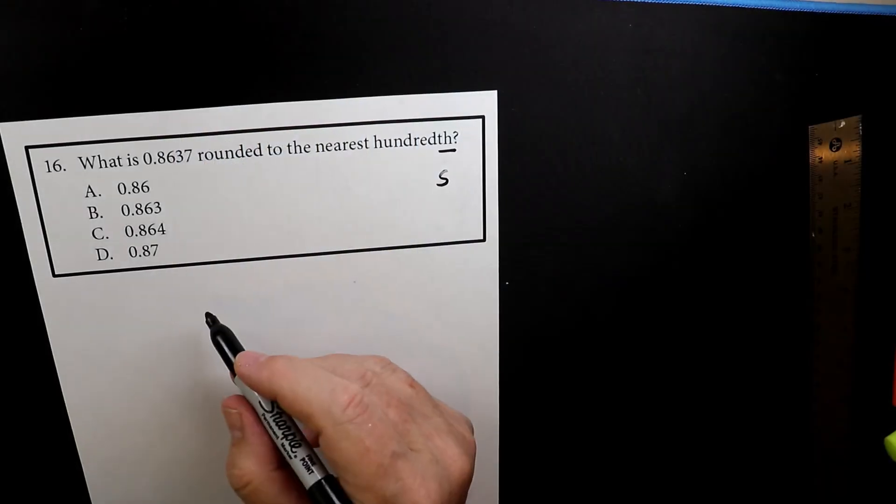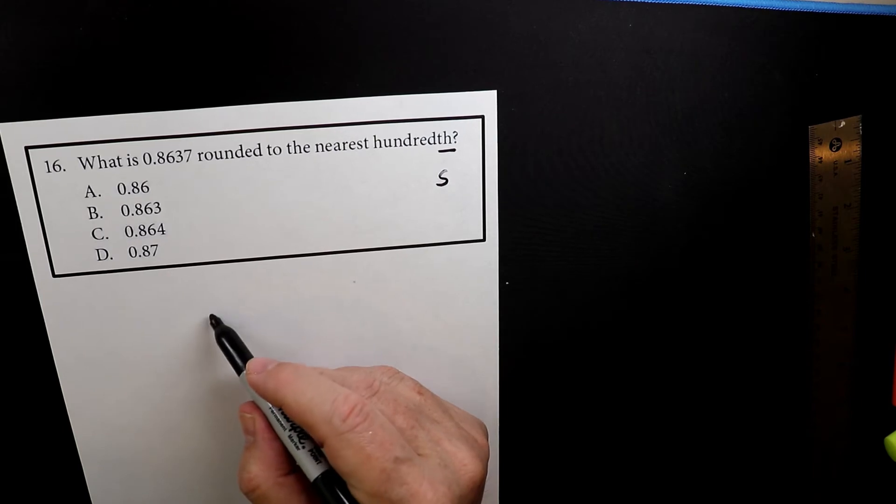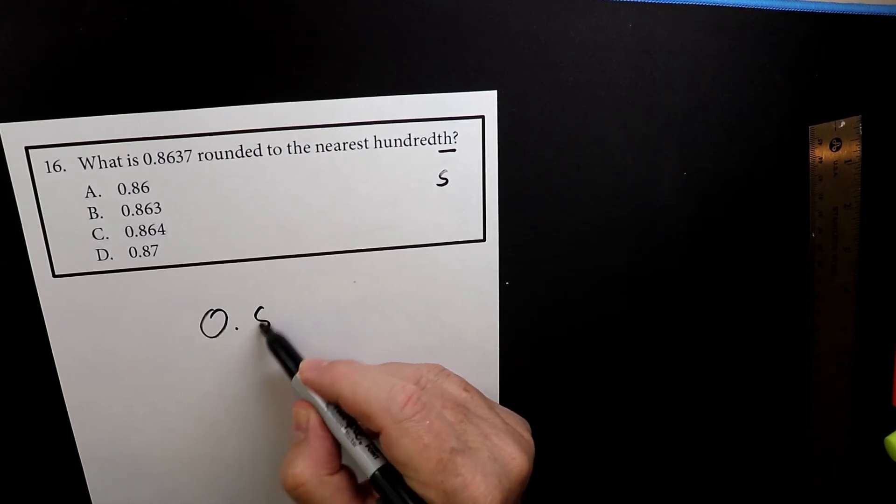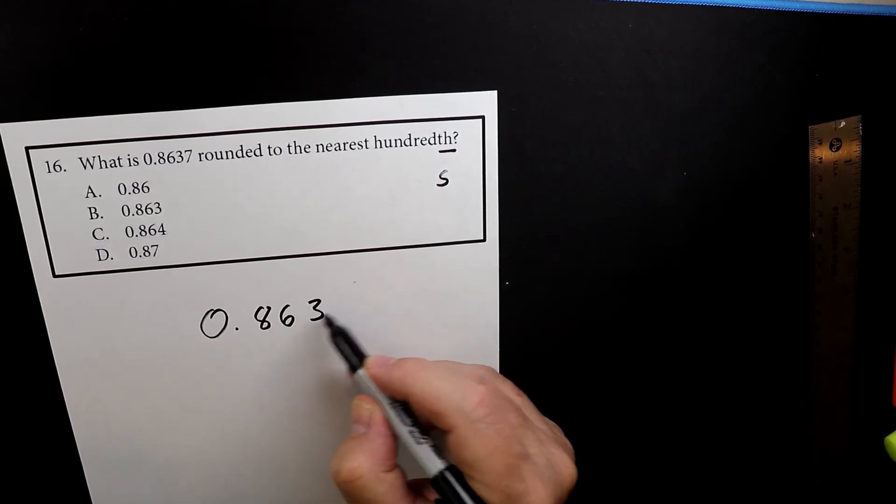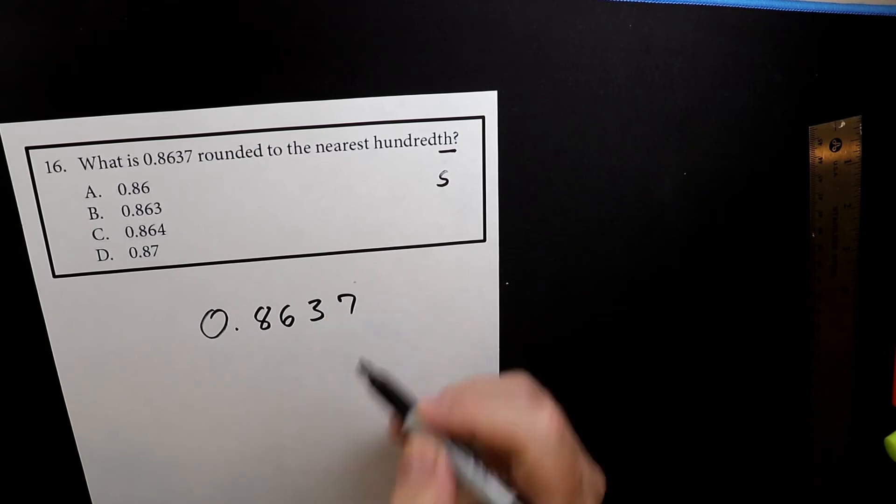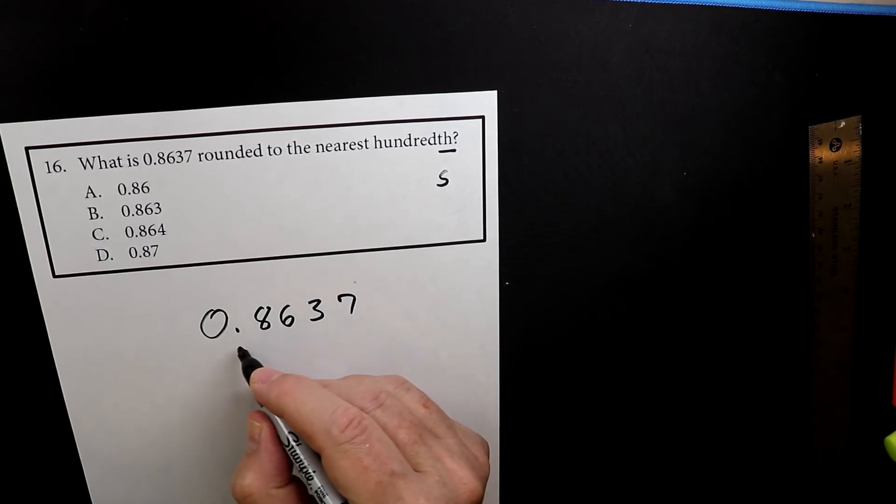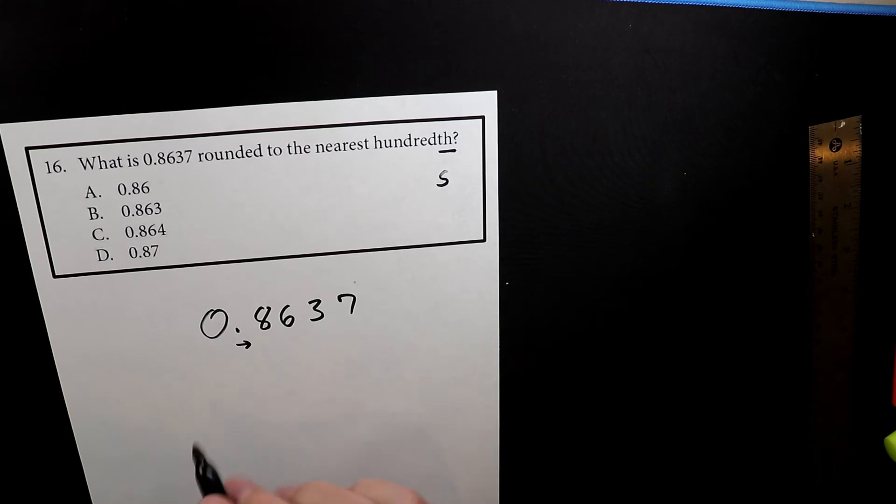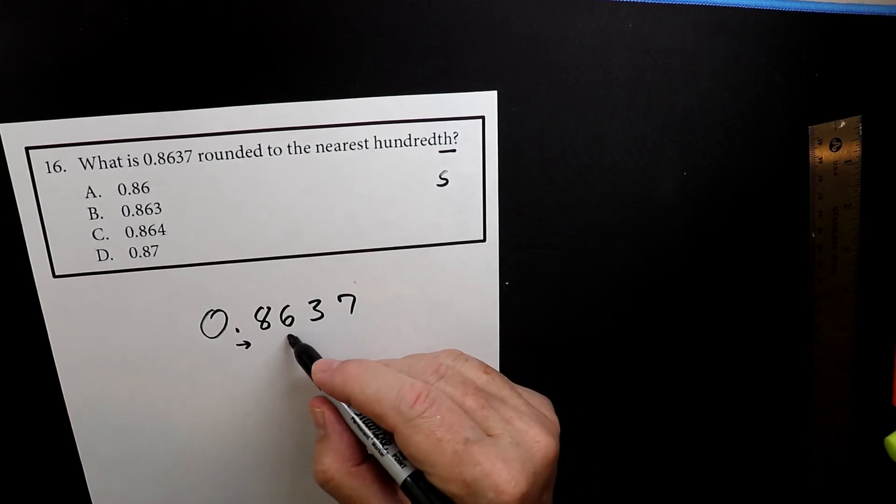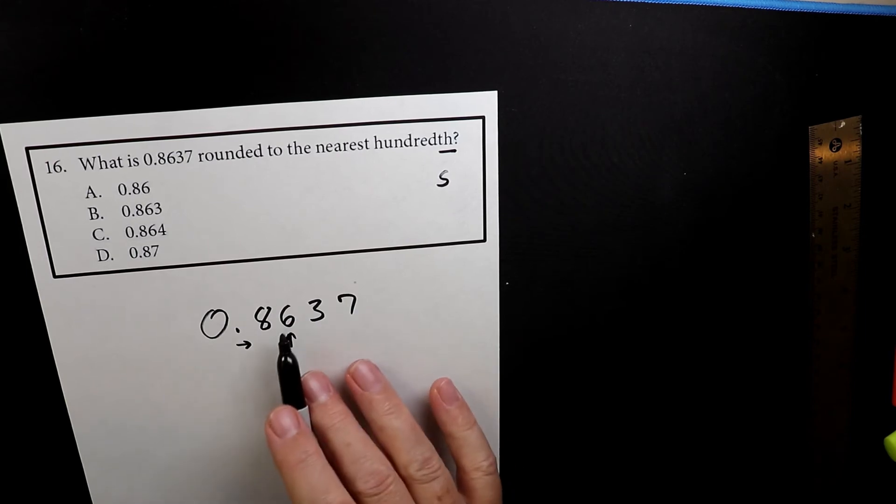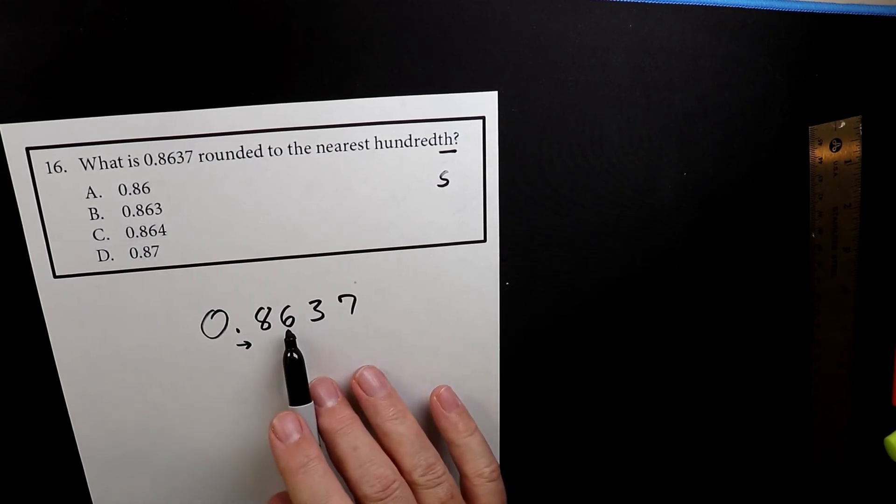So for this one, I'll write the numbers out big again. So we have 0.8637 and we've already determined that hundredths is the space 2 to the right of the decimal.